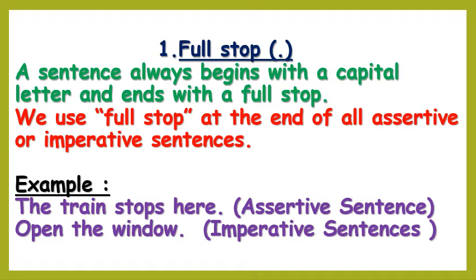An assertive sentence expresses a statement to tell a fact and always ends with a full stop. For example: the train stops here; we all wish to live a happy life; the sun rises in the east; Miss Neha is a good teacher. These are all assertive sentences.